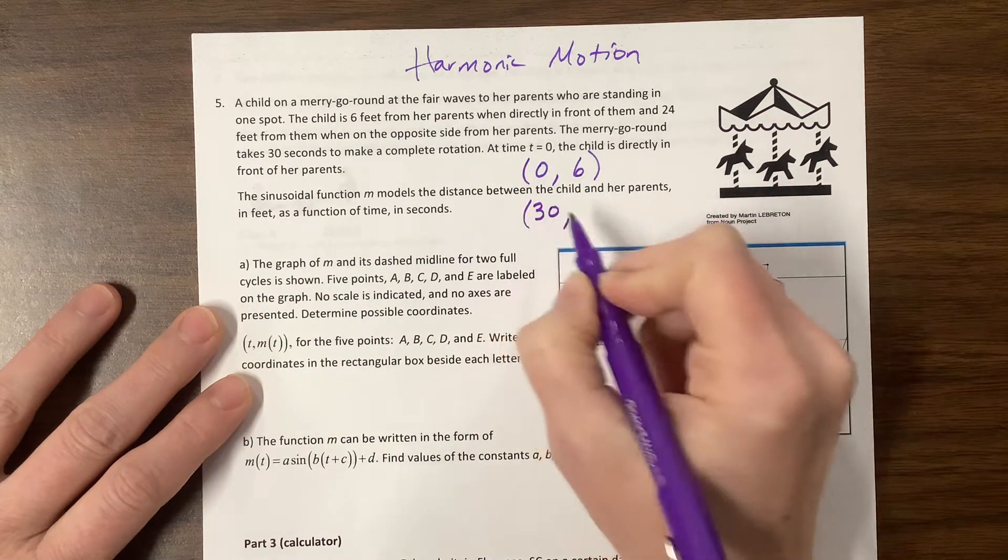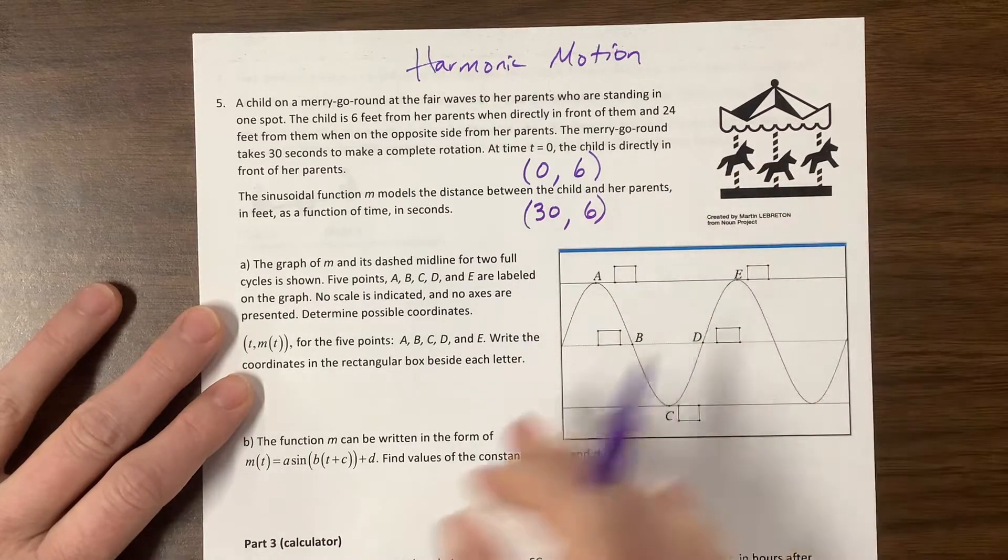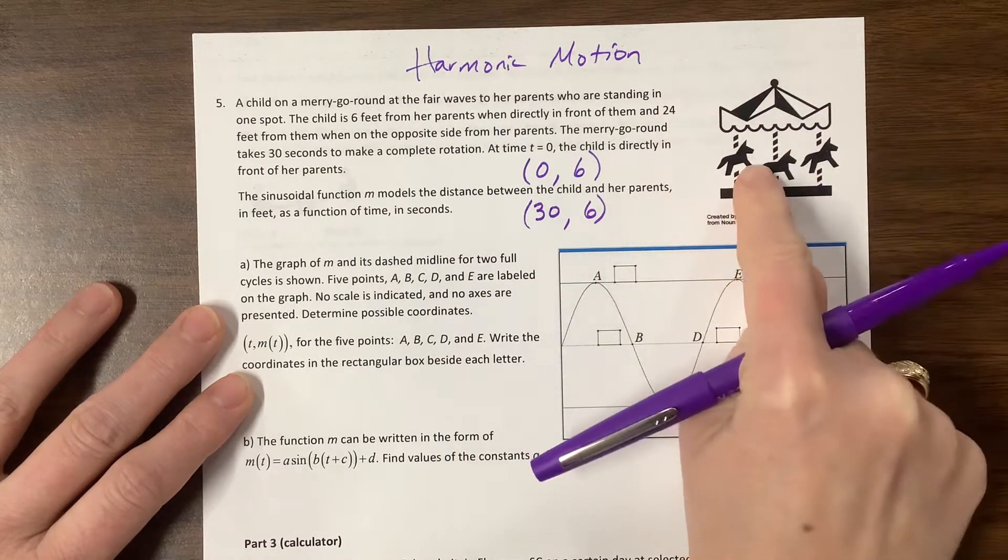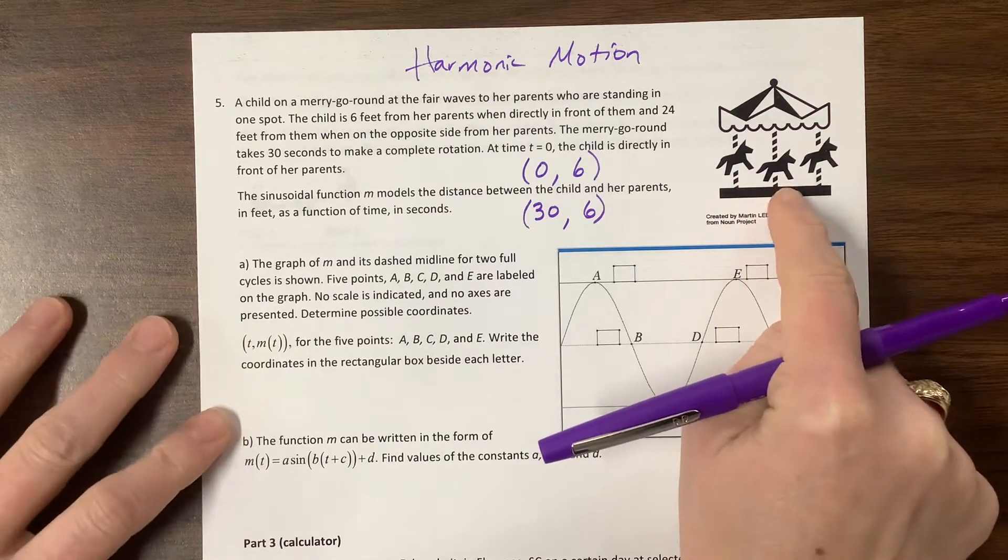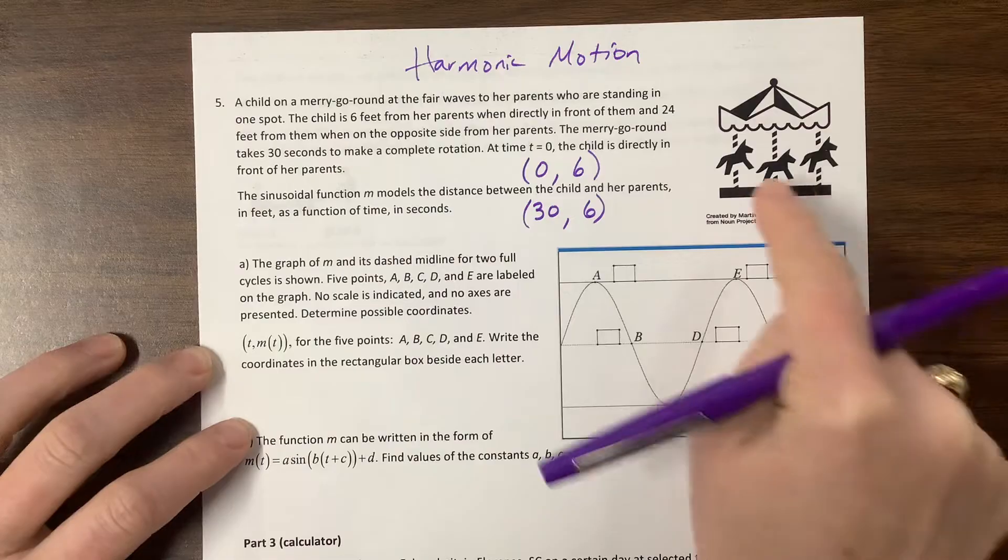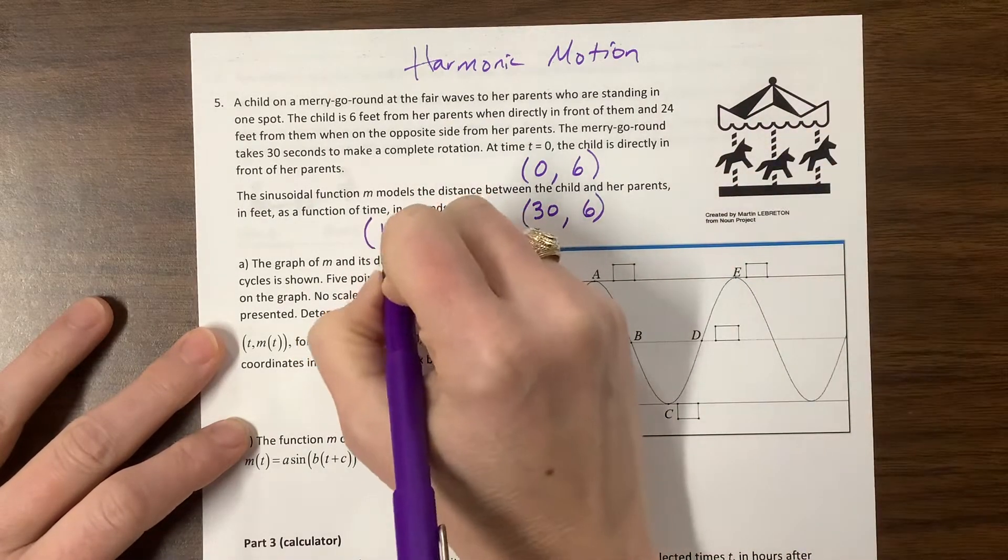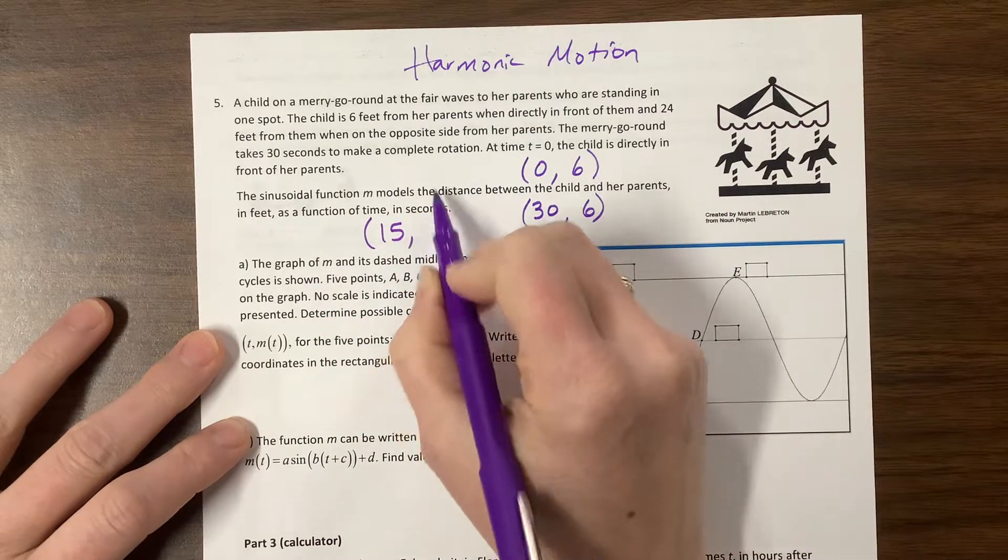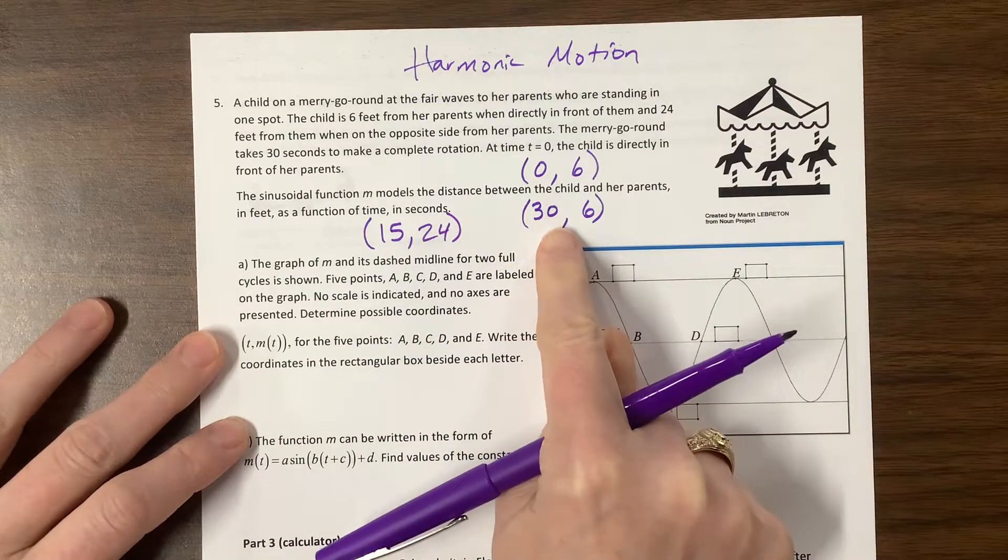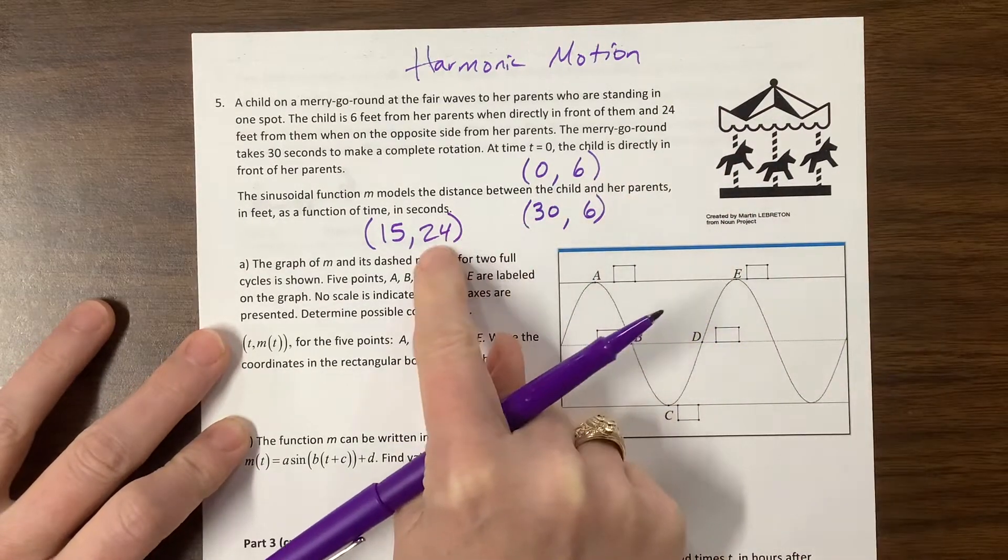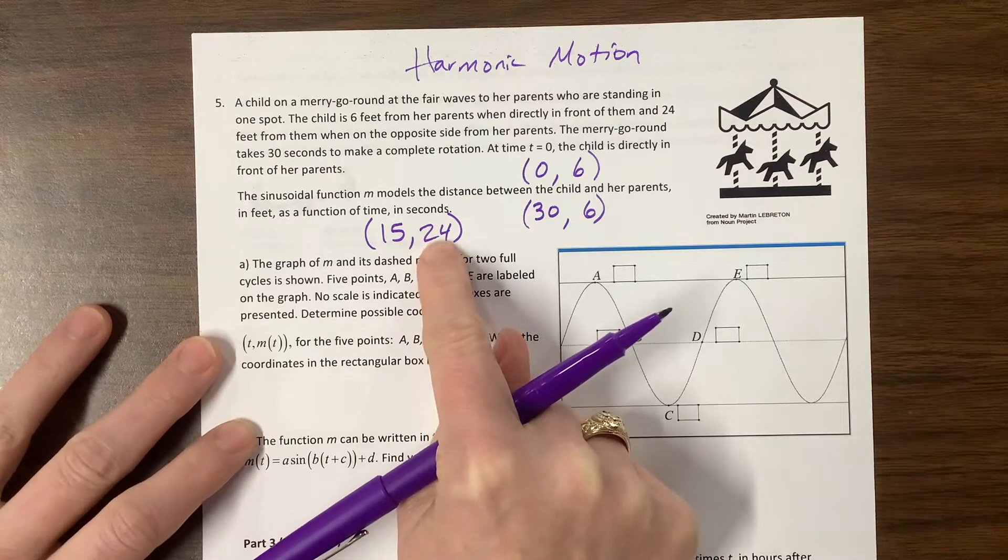So at time zero, the child is directly in front of her parents, which means at time t, the distance away from the parents is six feet. And then if it takes 30 seconds to do a complete rotation, we would also have at time 30, we're six feet away. And then halfway through that time, so as she's moving around the merry-go-round, we took my nieces and nephew on the merry-go-round over Christmas time. It was very fun.